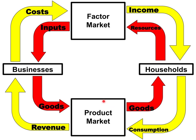In the product market, the roles are reversed. Households are buying, and the businesses are selling. Businesses are selling goods and services through the product market to the households, and households are paying for them — they're consuming them. That consumption becomes revenue to the business.